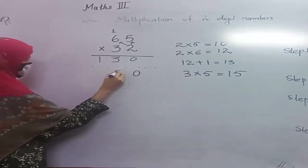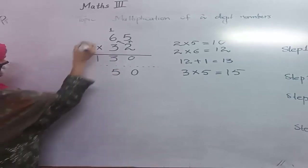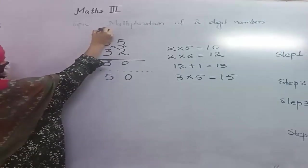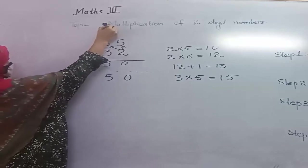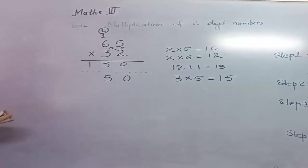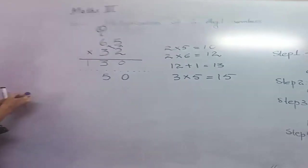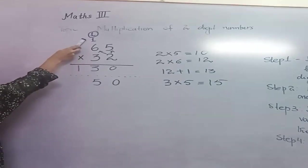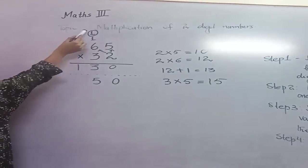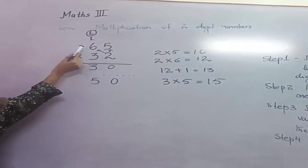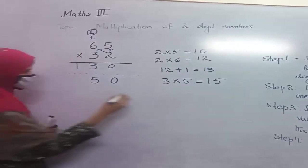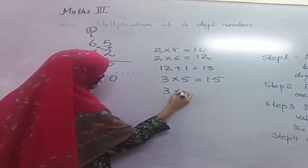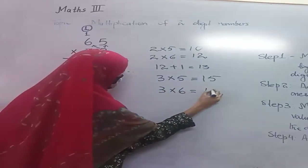We write here 5 and 1 carry over on the top. Students, don't be confused. We have already used this 1, so now we use this 1. 3 multiplied by 6 equals 18.